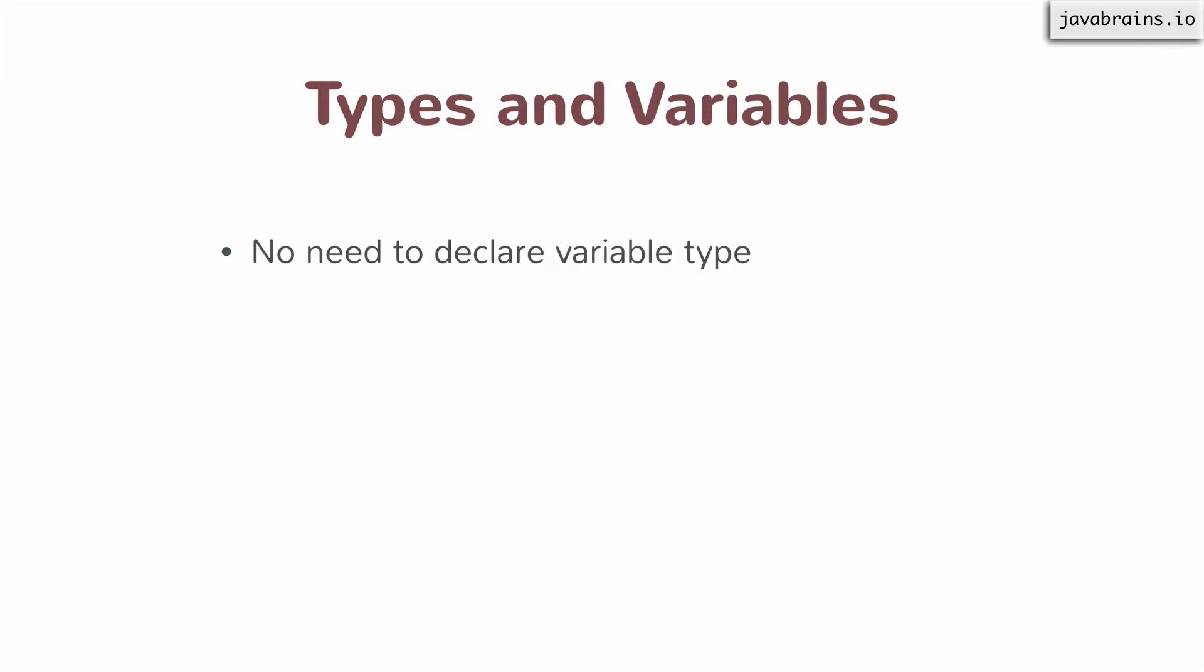To summarize types and variables: first, we don't need to declare a variable type when declaring a variable. All you need to do is use the var keyword and give it a name. JavaScript knows it's a variable and will allocate space for that variable.